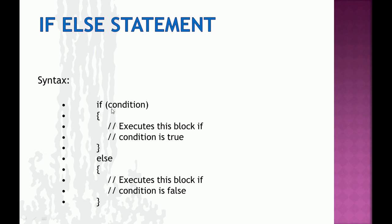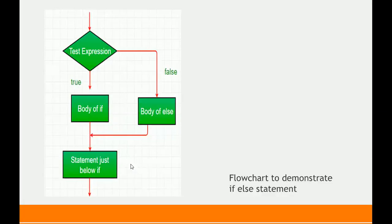For the if-else statement, we give the condition after 'if'. If this condition is true, expression one is executed. If the condition is false, the control moves to the else part and whatever is defined inside the else block gets executed. In the flowchart, if the test condition is true it executes expression one; if false it executes expression two, and finally gives the desired output.